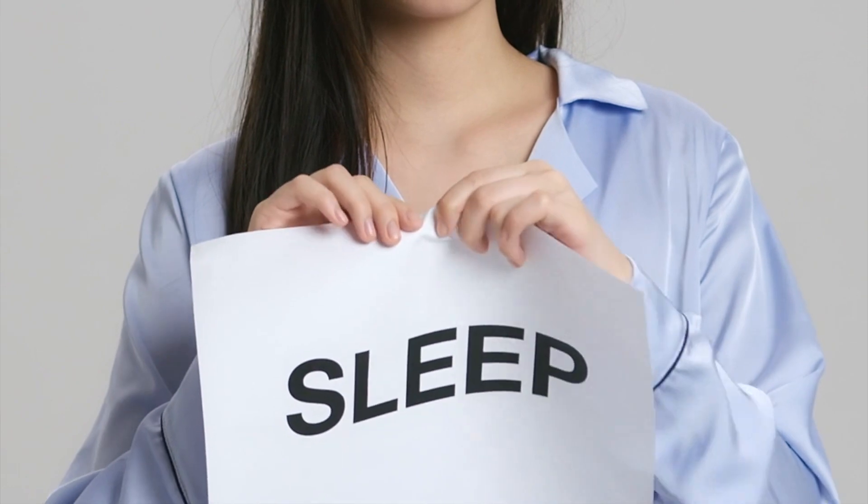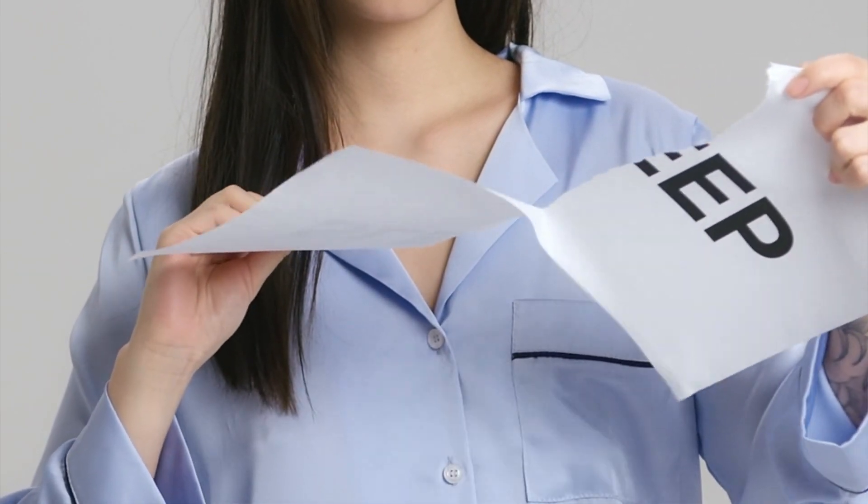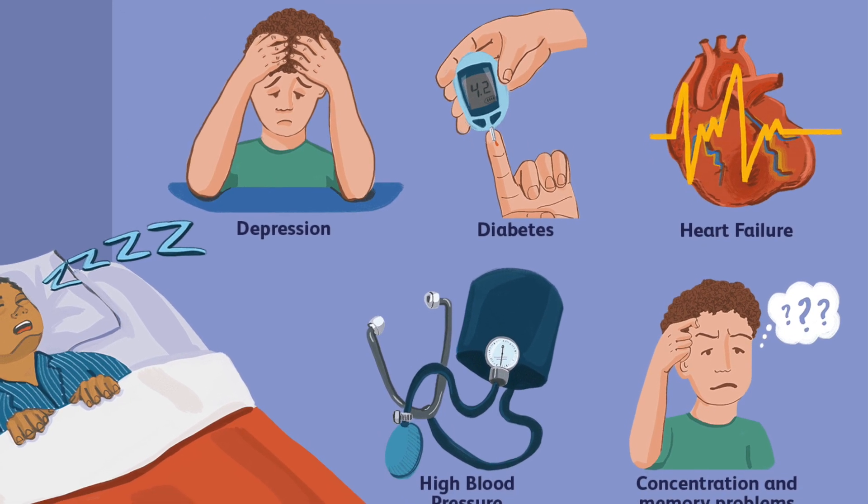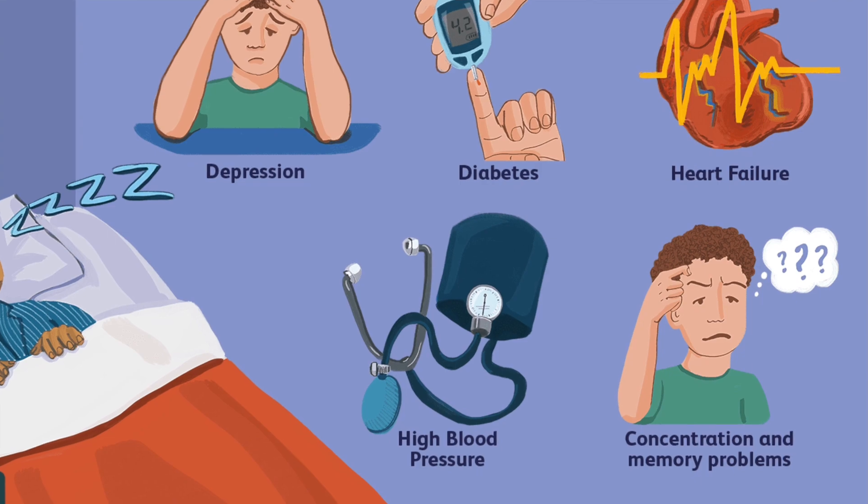When an episode of apnea occurs, the brain immediately gets triggered and sends a signal to awaken the person. Once awakened, these muscles get activated again and breathing continues normally — until the next episode of apnea. These episodes can occur over and over again multiple times throughout the night, preventing a person from getting deep, restful sleep. If left untreated, sleep apnea has been linked to serious medical conditions including stroke, high blood pressure, and diabetes, so do not take it lightly.